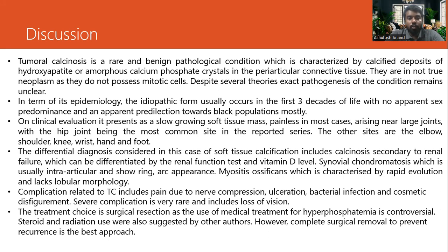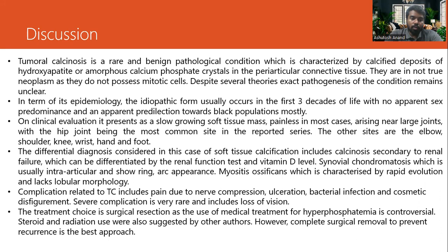Complications related to this condition include pain due to nerve compression, ulceration, bacterial infection, and cosmetic disfiguration. Severe complication is very rare and will include loss of sensation. The treatment of choice is surgical resection, as the use of medical treatment for hyperphosphatemia is controversial. Steroid and radiation use were also suggested by other authors. However, complete surgical removal to prevent recurrence is in fact the best approach.